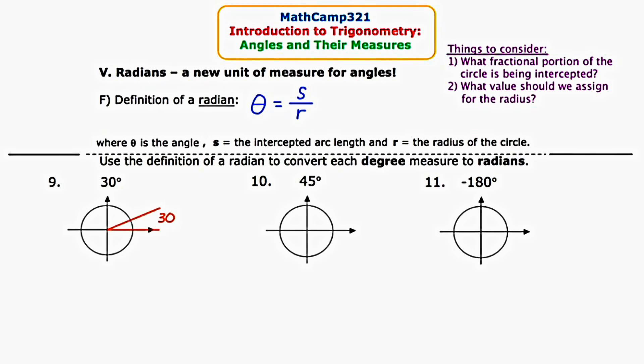One component of the formula is to know the intercepted arc length. So I'm going to highlight what the arc length is by using the color blue. That little blue arc is the intercepted arc that is cut off by this 30 degree angle. The first consideration is what fractional portion of the circle does that arc length represent? Well, a full circle is 360 degrees, and this is 30 out of those 360 degrees, which reduces to 1/12.